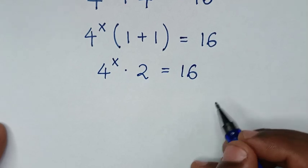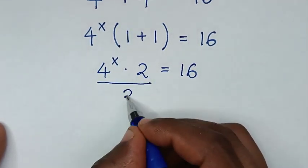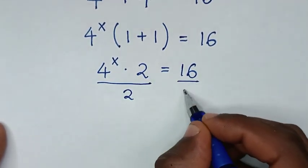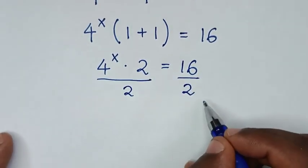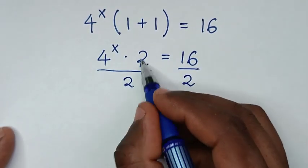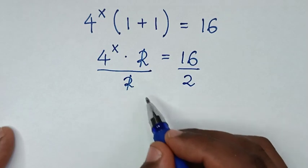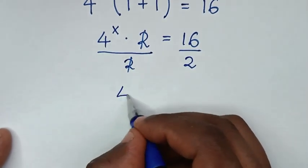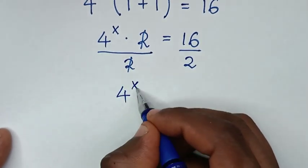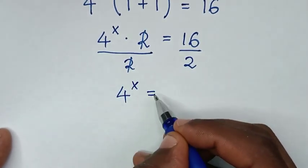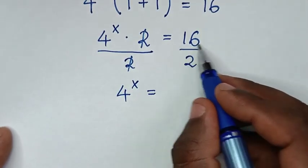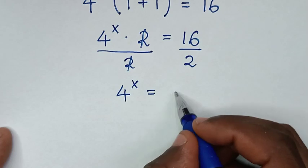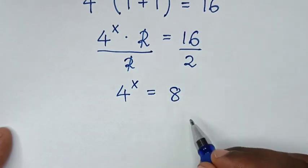Then we divide by 2 on both sides, so 2 and 2 will cancel. Then it will be 4 power x is equal to 16 divided by 2, which is 8.